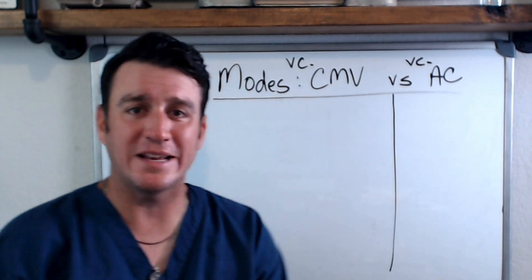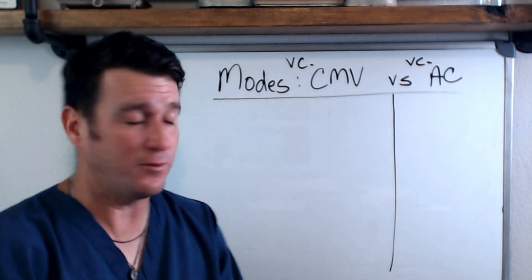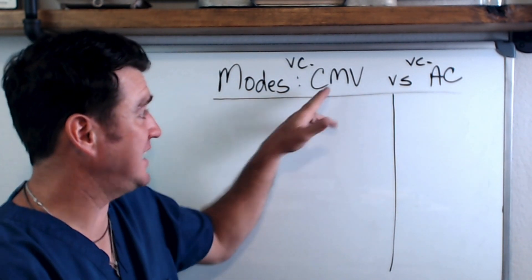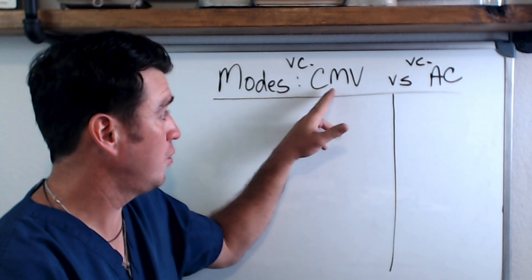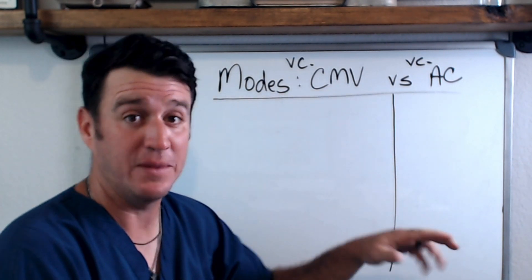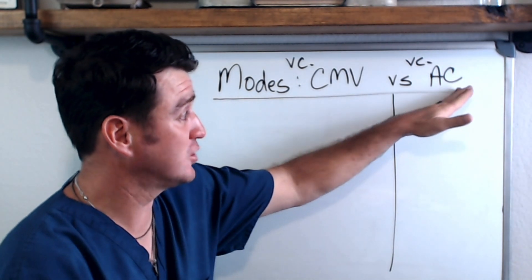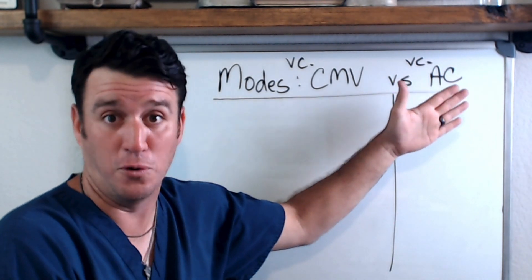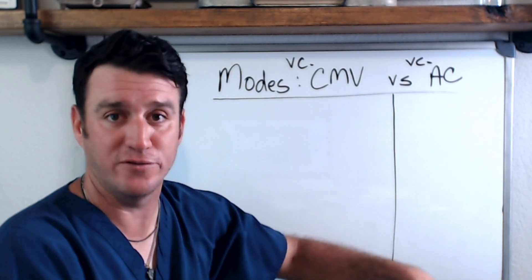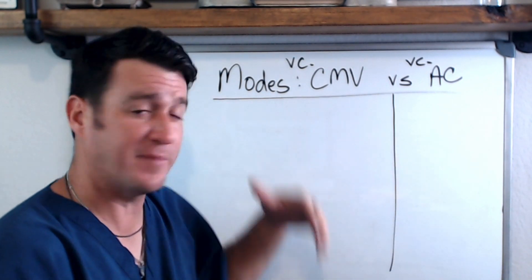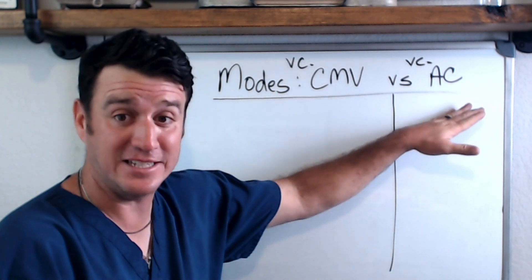Let's break down these two modes of mechanical ventilation. We have CMV, which stands for controlled mandatory ventilation, and then we have assist control, which stands for assist control mandatory ventilation. From now on, I'm going to refer to these as CMV and AC.